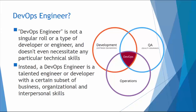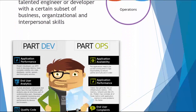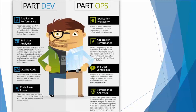A DevOps engineer is a talented engineer or developer with a certain subset of business, organizational, and interpersonal skills. If you are a developer and also an engineer with excellent interpersonal and organizational skills, you have a lot of potential. DevOps is basically the intersection of development, quality assurance, and operations — you are part dev and part ops.